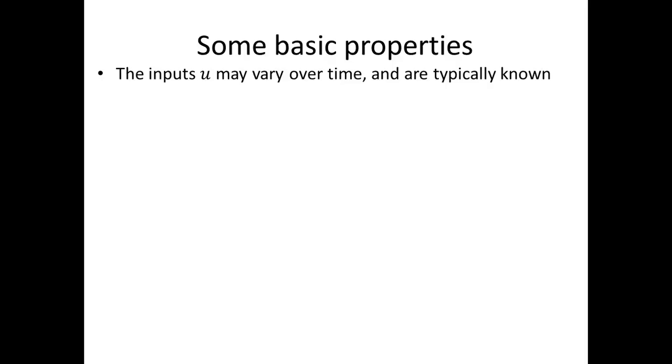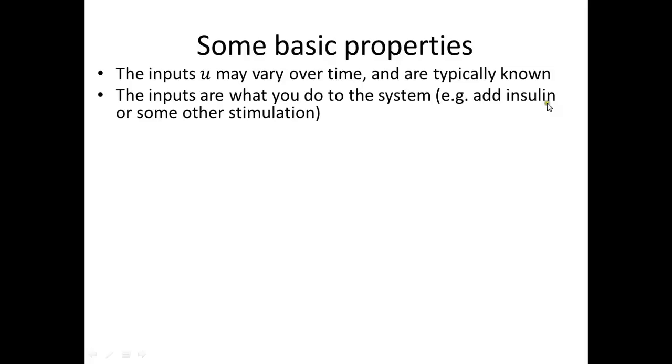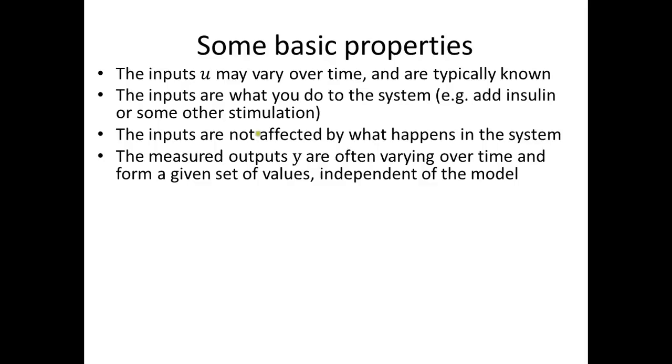The inputs may vary over time, and usually they vary somehow over time. Usually it's some kind of change you do at a specific time point. Sometimes it changes a lot all the time, and pretty often it only changes at a few time points. The inputs are what you do to the system, so they are typically known. This thing that you do to the system is typically that you add something, for instance some insulin or some other hormones, some other stimulation. You might flip the MRI machine spin, or it's basically what you are doing. Since it's something you are doing to the system, it's not being affected by what happens inside the system. We know the whole input series because it's independent of what happens inside the system, whereas the things that happen inside the system are usually interlinked.